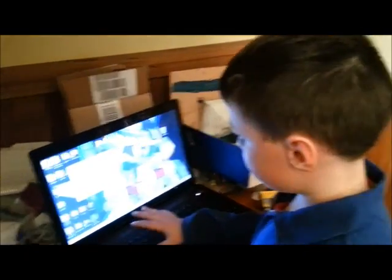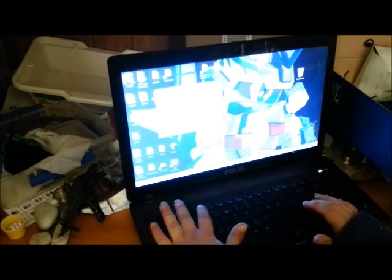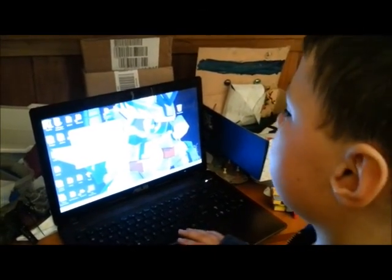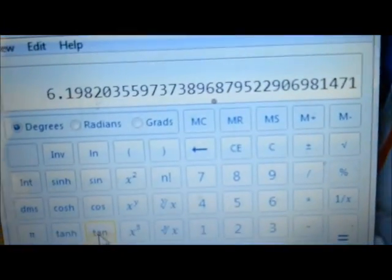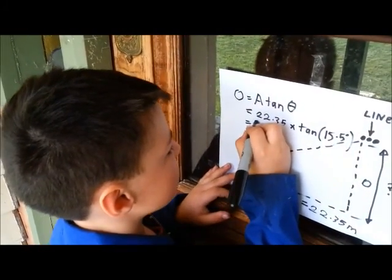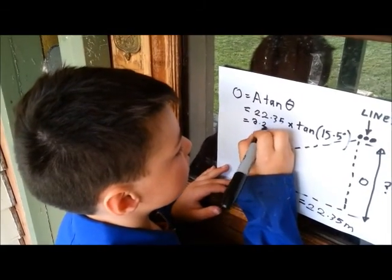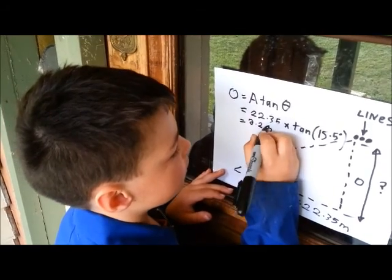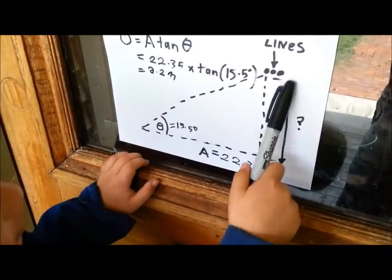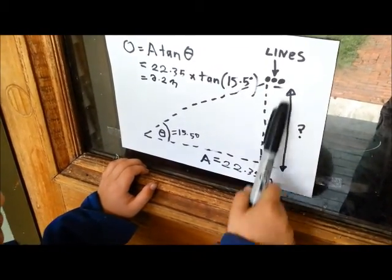Let's work out the trigonometry. This essentially equals 6.2 — it's actually 6.198 — so it was 6.2 meters. We've figured out the height is 6.2 meters.